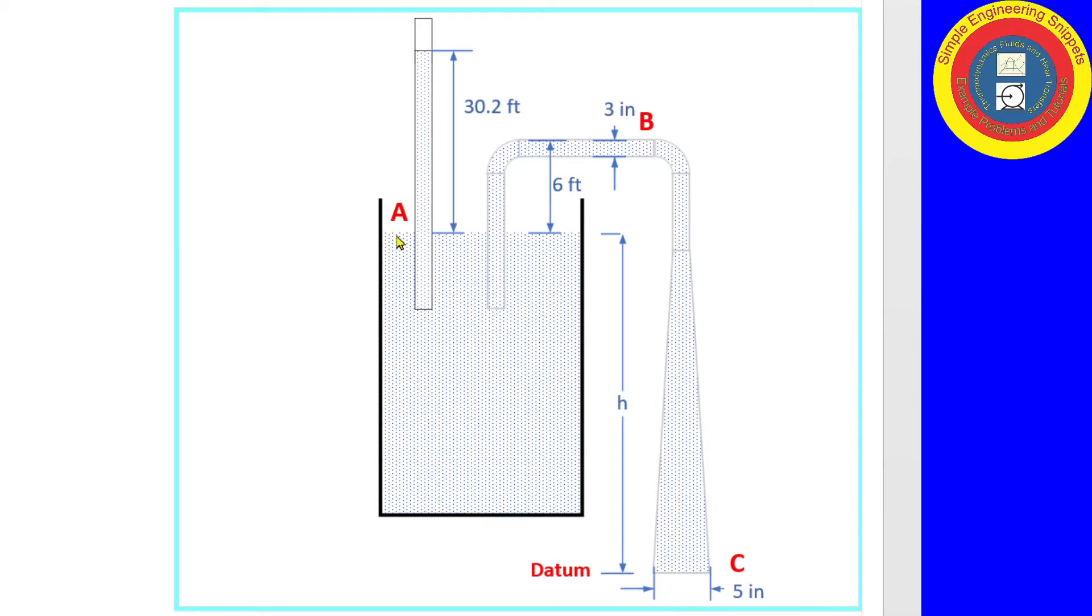Now, I've labeled the surface of the water in the tank as point alpha. This makes sense. We know it's atmospheric pressure there. It's a large tank, so the velocity is zero. And the elevation of alpha is our unknown h. So that's a pretty convenient location.